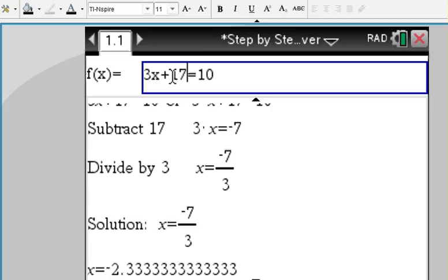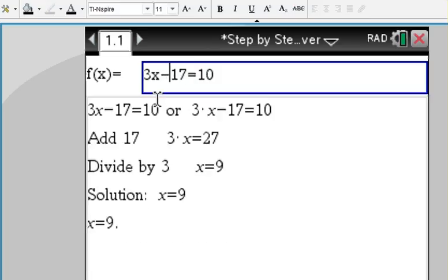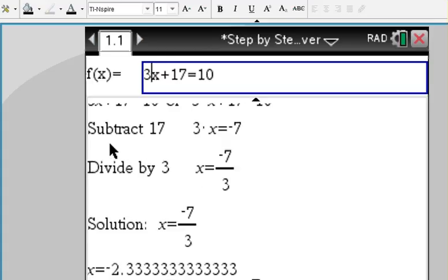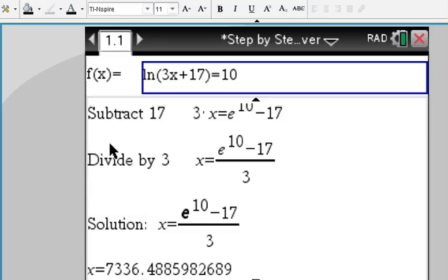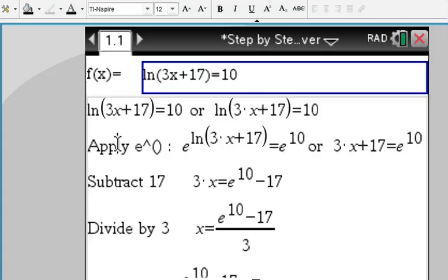If we only change a number, immediately the steps change. Minus turns into adding as opposed to subtracting. Let's go back to class and let's say our teacher gets mean and says, 'Well, what about if we have a natural logarithm equation: 3x plus 17 equals 10?'